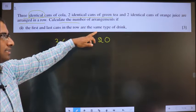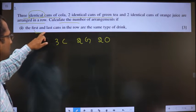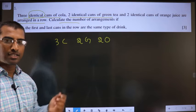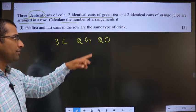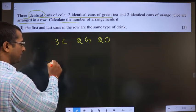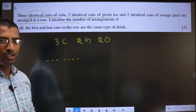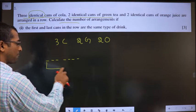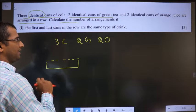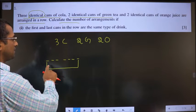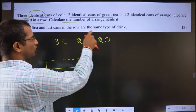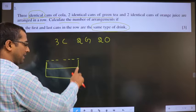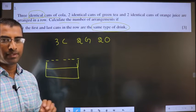Calculate the number of arrangements if the first and the last cans in the row are the same type of drink. Total drinks given are 3+2+2 = 7, so you need 7 blanks. The condition to satisfy at all times is: the first can and the last can in the row should be of the same type.